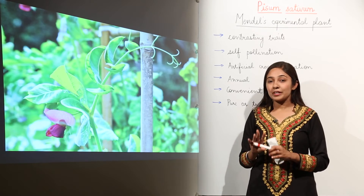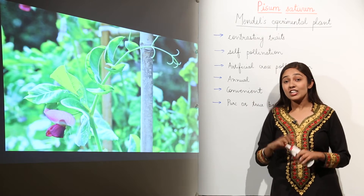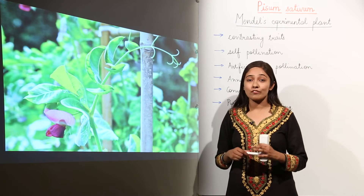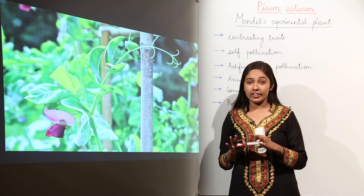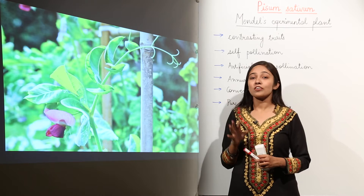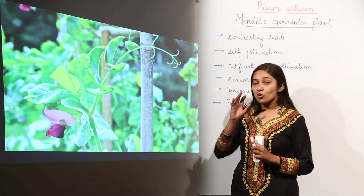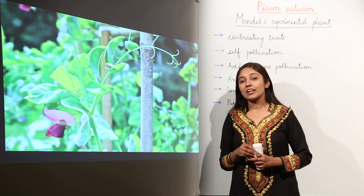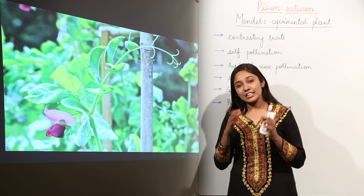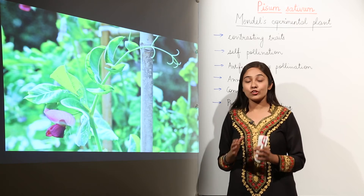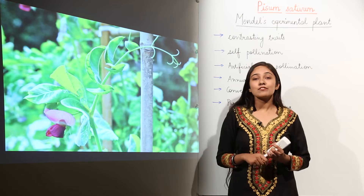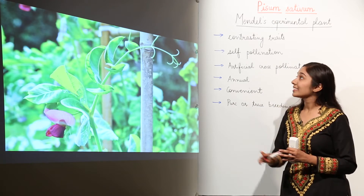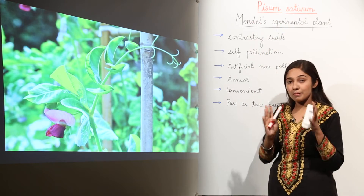For all his experiments and to lay down the basic laws of heredity, the father of heredity, Gregor John Mendel chose the pea plant — the garden pea plant, or edible pea plant — for all his experiments. The scientific name of this garden pea plant is Pisum sativum.